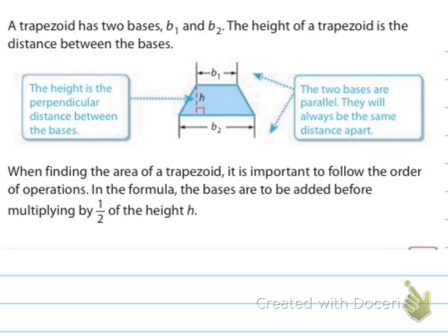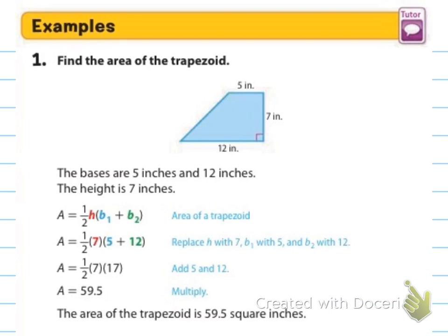A trapezoid has two bases, B1 and B2, and the height of a trapezoid is the distance between the bases, where it comes to that 90 degree angle, that perpendicular angle. So it could be anywhere. They could show me my height anywhere, as long as it goes from the base one to base two. It says, when finding the area of a trapezoid, it is important to follow the order of operations. In the formula, the bases are added before multiplying by one half of the height.